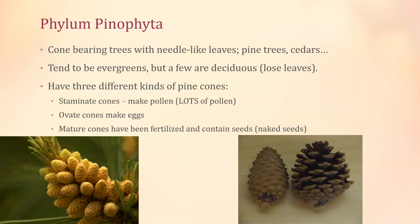Most of these are evergreens — they keep their needles or scales instead of full leaves all year round. The exception is the bald cypress, which is called that because in winter it becomes bald and loses all its leaves. The lab manual mentions three different kinds of pine cones; two you should easily recognize, but the third — the staminate cone — you only notice if you're paying attention.